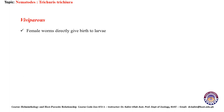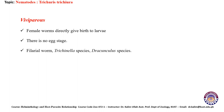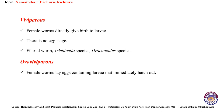Viviparous: female worms directly give birth to larvae — there is no egg stage. Examples are filarial worms, Trichinella species, and Rhabditis species. The third type is ovoviviparous: female worms lay eggs containing larvae that immediately hatch out. Examples are Strongyloides species.